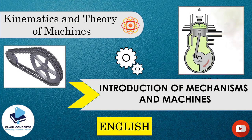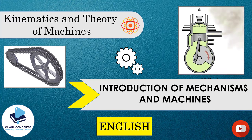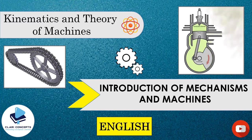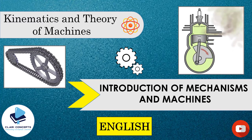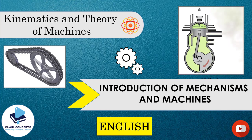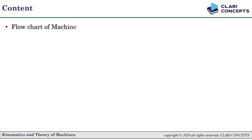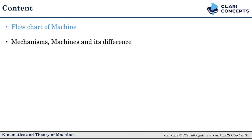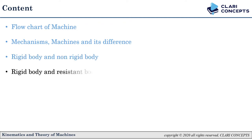Hello friends and welcome back to Clary Concepts. In this series of Kinematics and Theory of Machines, today we are going to see Introduction of Mechanisms and Machines, Flowchart of Machine, Mechanisms, Machines and their difference, Rigid Body and Non-Rigid Body, Rigid Body and Resistant Body, and Kinematic Link and Classification or Types of Kinematic Link.